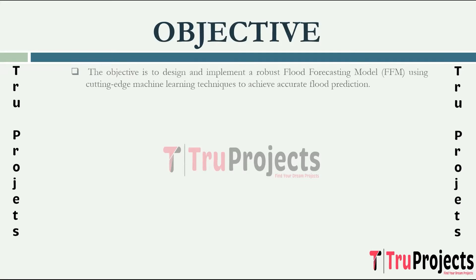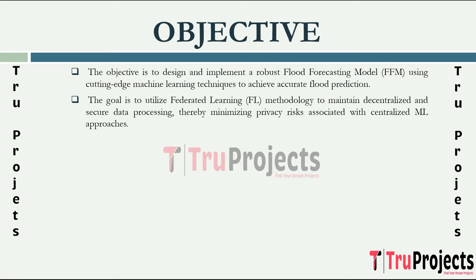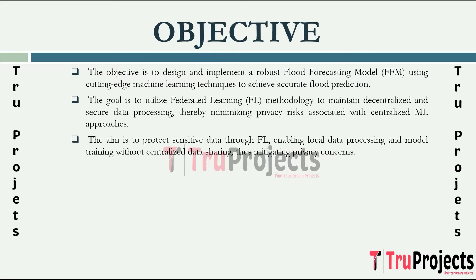Coming to the objectives of the project, the primary objective is to design and implement a robust flood forecasting model that utilizes state-of-the-art machine learning techniques to accurately predict flood occurrences. The goal is to implement federated learning methodology to ensure that sensitive data remains decentralized and secure, thereby mitigating privacy risks associated with traditional centralized machine learning approaches. This is achieved by adopting federated learning, which enables local data processing and model training without the need for centralized data sharing.